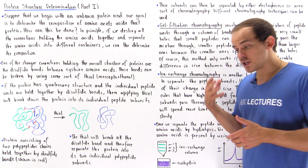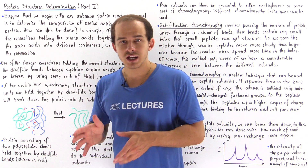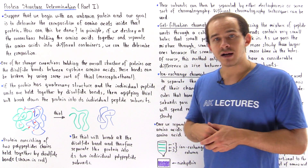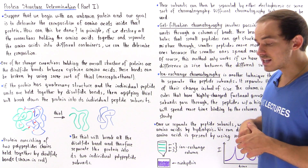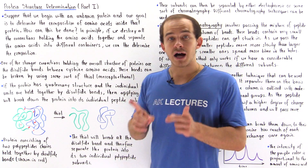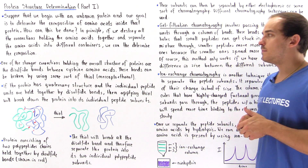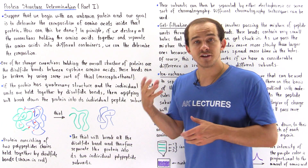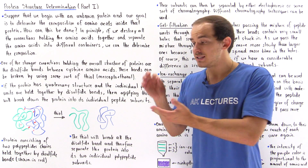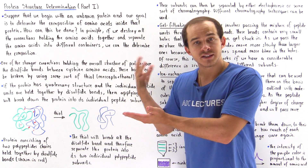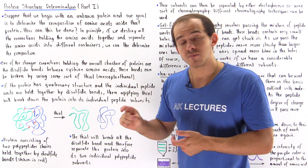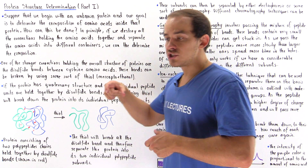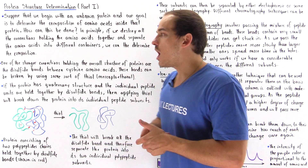Theoretically, the way we would go about determining the composition of the protein is by destroying all the connections holding our amino acids together. This includes the peptide bonds — the amide bonds holding individual amino acids — as well as disulfide bonds, the bonds between our cysteine amino acids. Once we break all these bonds and separate our amino acids into their individual forms, placing them into individual beakers and counting them up, that gives us the ratio of one amino acid to the other — the composition of our protein.